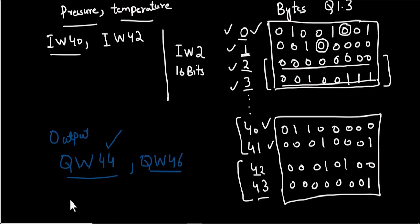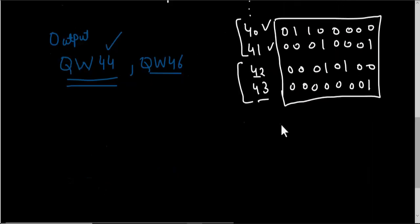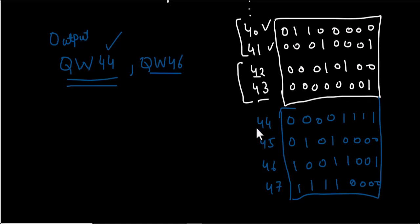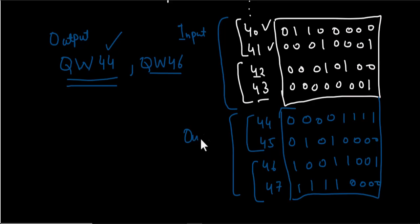Suppose we have interfaced an analog valve or a frequency drive to our PLC output channel. QW 44 means byte 44 and byte 45, and QW 46 means byte 46 and byte 47. We reserve these two word values for our output analog devices — for example, a frequency drive and an analog valve. Note that the specific address assignments vary from case to case; these were just for the sake of understanding.